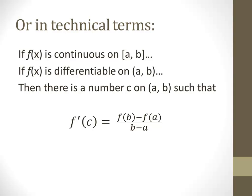The slope is rise over run. The rise is the difference in the y-values, so f(B) minus f(A), divided by the difference of the x-values, B minus A. So f(B) minus f(A) over B minus A is another way of saying the slope of the secant line that goes from A at the beginning of the interval to B at the end of the interval.